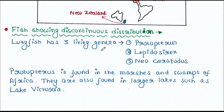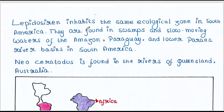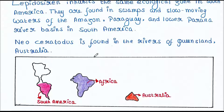Let's talk about some fish. Lungfish has three living genera: Protopterus, Lepidosiren and Neoceratodus. Protopterus is found in the marshes and swamps of Africa and also in larger lakes such as Lake Victoria. Lepidosiren inhabits the same ecological zone — swamps, marsh areas, and slow-moving waters of the Amazon, Paraguay and lower Paraná river basins in South America. Neoceratodus is found in the rivers of Queensland, Australia. So some are found in Australia, some in Africa, and some in South America.